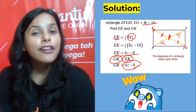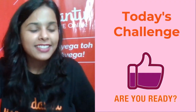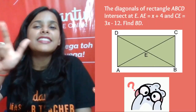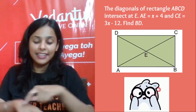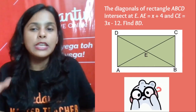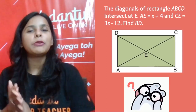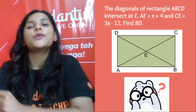Let me know in the comment section if you boomed that. Now, are you ready for the challenge of the day? My pirates never ever lose — they always boom every question. So boom this challenge problem too: the diagonals of rectangle ABCD intersect at E. AE is equal to x plus 4, and CE is equal to 3x minus 12. It's a simple, sweet little question — let me know your answer in the comments!